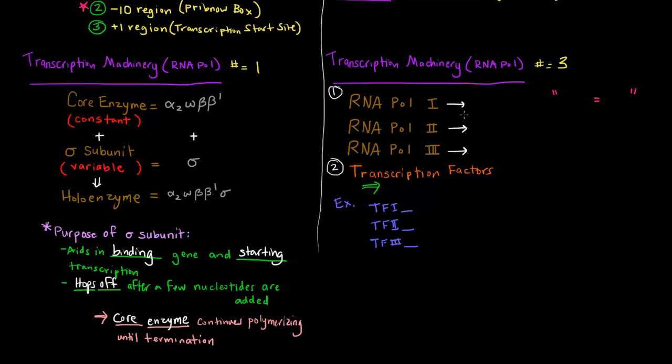Now in eukaryotes, it's a little bit different. They don't have just one core enzyme and then variable sigma subunits. What they have is three different RNA polymerases, cleverly named RNA polymerase I, II, and III. Now, RNA polymerase I, II, and III each has their own job.